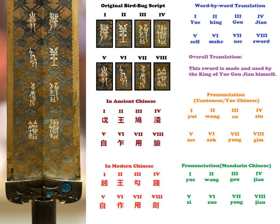The Chinese character Niao means 'bird.' The character Chang means any creature that looks like a worm, including invertebrate worms and reptiles such as snakes, lizards, and even the Chinese dragon. The character Zhuan means 'seal script.'